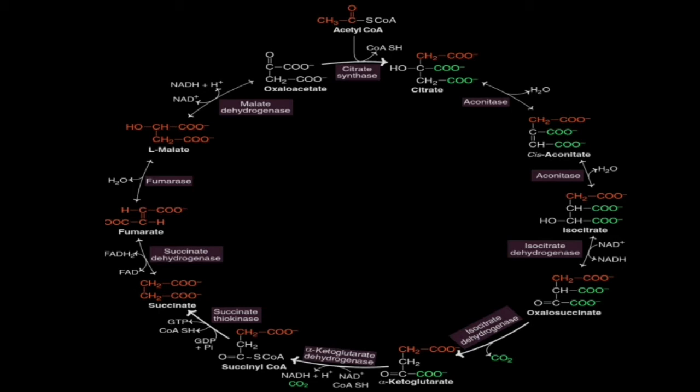Oxaloacetate is finally regenerated. As discussed, the first reaction is condensation of acetyl-CoA and oxaloacetate, and at the end oxaloacetate is regenerated — making it a catalytic intermediate. The two carbons of acetyl-CoA are removed as carbon dioxide, so oxaloacetate acts as a catalyst in the TCA cycle.